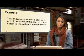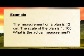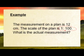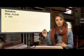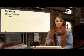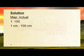Let's look at another example. The measurement on a plan is 12 centimeters — so we know they're working with the map and the measurement is 12 centimeters. The scale of that map is 1 to 100. What is the actual measurement? We know the scale is 1 to 100. When you get your question, pick out all the things they tell you and write it out — it just makes it easier to answer. So 1 centimeter on the map is 100 centimeters in reality.